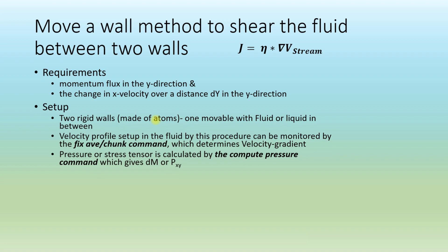How to set up the problem? We will define two rigid walls made of atoms, where one is movable. We put our fluid in between these walls. Shearing will create the velocity gradient. The velocity profile can be monitored using the fix ave/chunk command, and the pressure or stress tensor can be calculated using the compute pressure command.